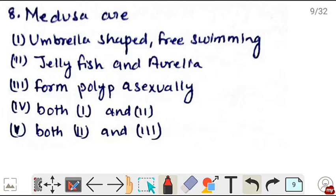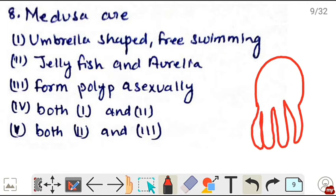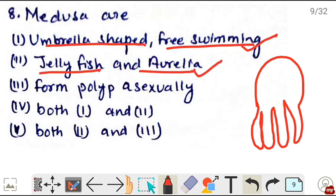Next, medusa are - medusa are umbrella-shaped free-swimming structures, and medusa show alternation of generation by sexually producing gametes, fusing, and then forming polyp. So medusa are umbrella-shaped free-swimming, this is true. Jellyfish and Aurelia, this is also true - jellyfish and Aurelia show only medusa form. Form polyp asexually, this is wrong - medusa sexually form polyp. Correct is option 4, both 1 and 2.